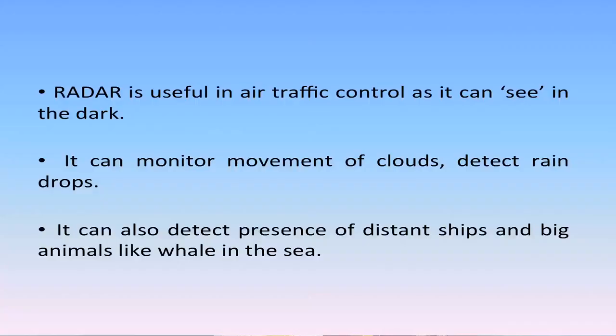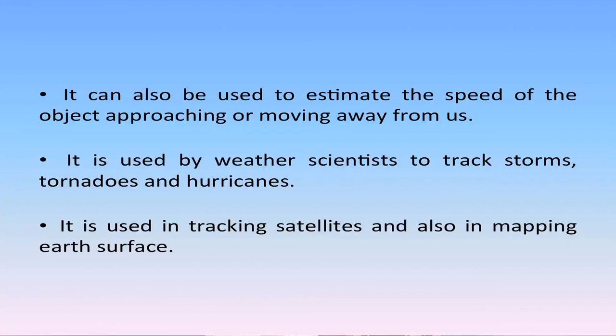If after a certain gap no reflection is received, we can presume there is no object within a certain distance, then we switch off the receiver and switch on the transmitter again. Radar is useful in air traffic control as it can see in the dark, monitor movement of clouds, detect presence of distant ships and large animals like whales in the sea, and estimate the speed of approaching or receding objects. It is used by weather scientists to track storms, tornados, and hurricanes, and also in tracking satellites and mapping the earth's surface.